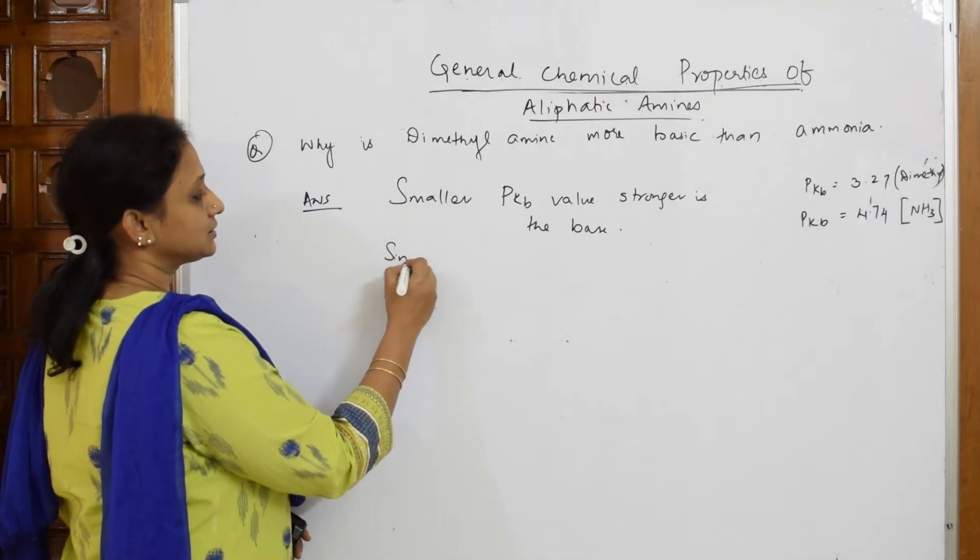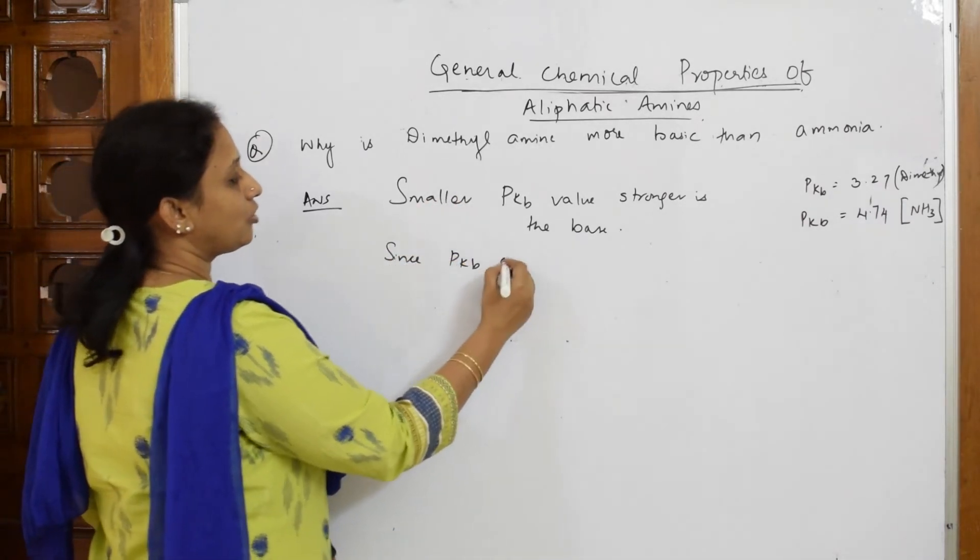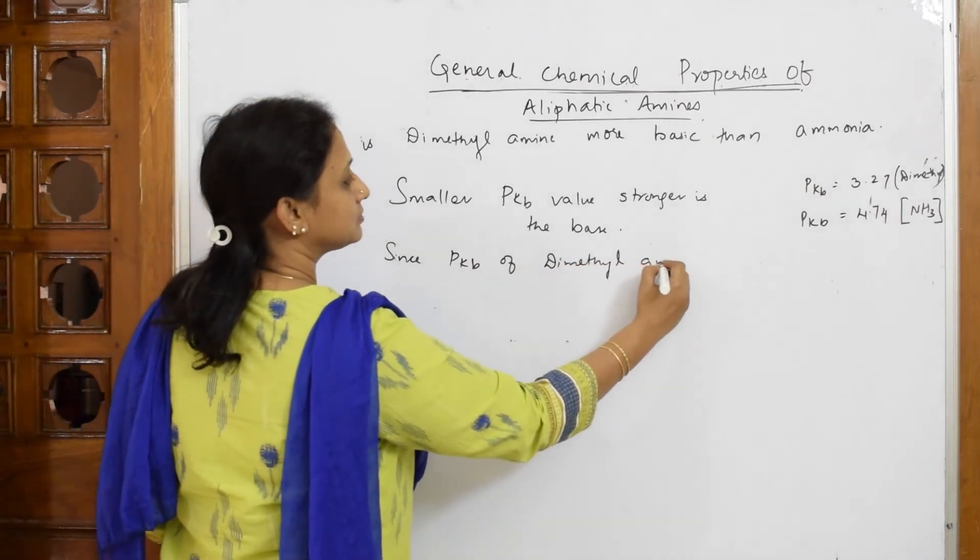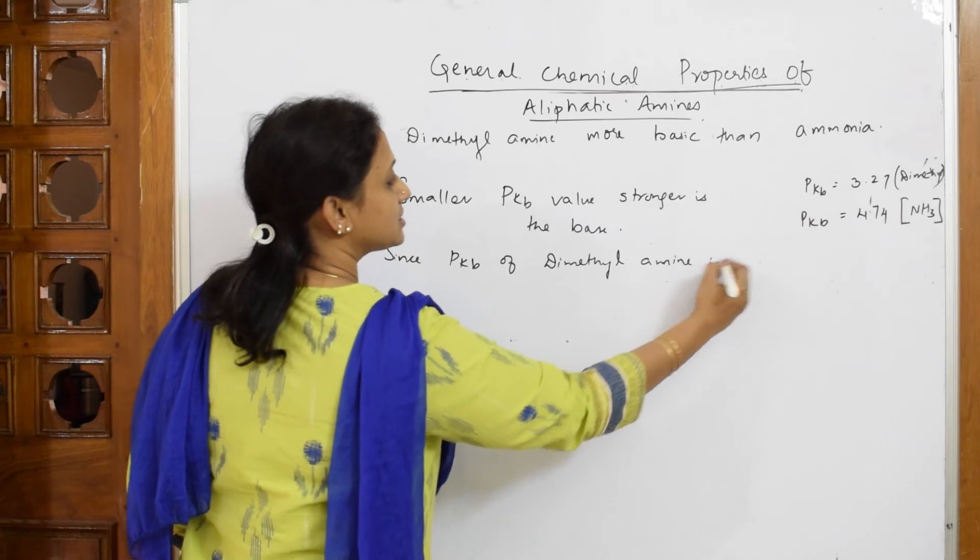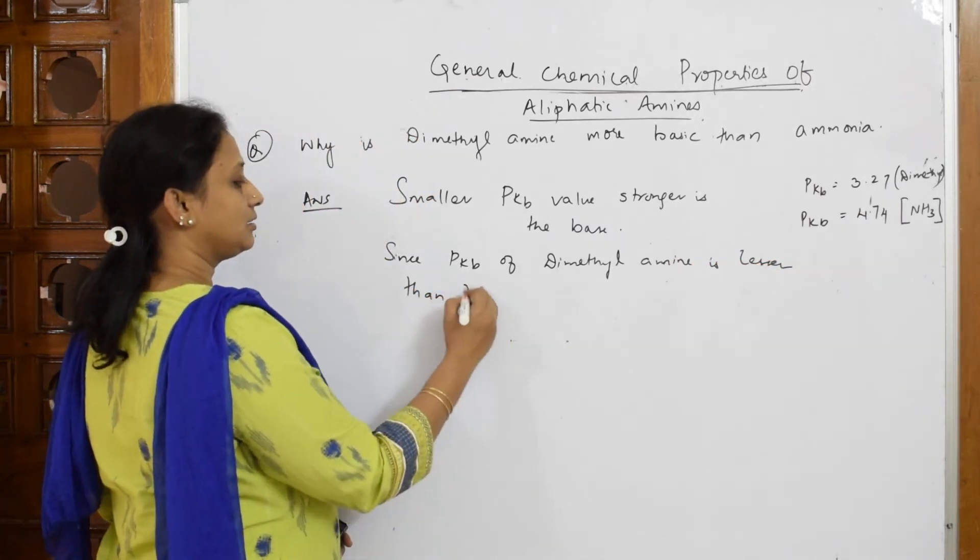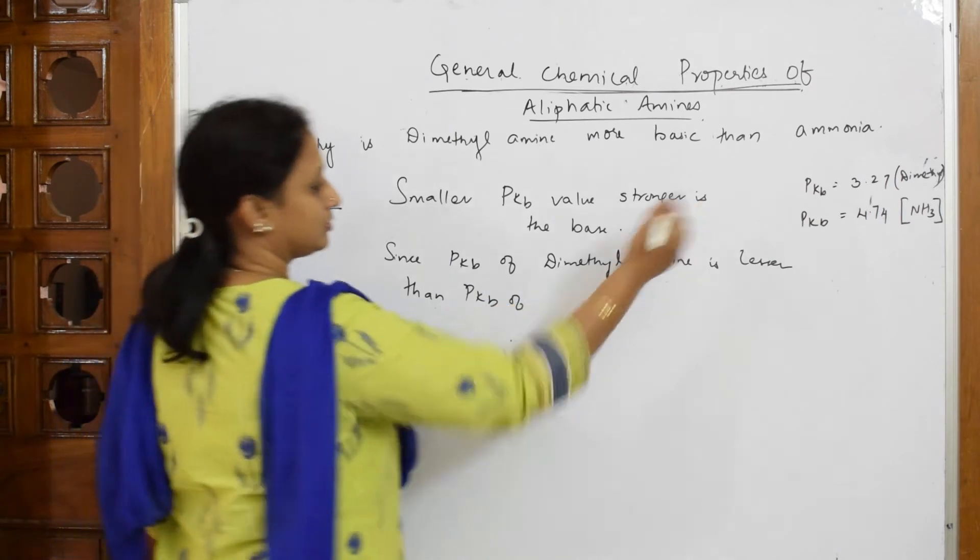Since PKB of dimethyl amine is lesser than PKB of ammonia.